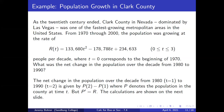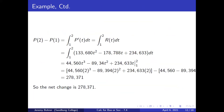As the 20th century ended, Clark County in Nevada, dominated by Las Vegas, was one of the fastest growing metropolitan areas in the United States. From 1970 through 2000, the population was growing at the rate of r(t) = 133,680t² − 178,788t + 234,633, where 0 ≤ t ≤ 3, in people per decade, and t = 0 corresponds to the beginning of 1970. What was the net change in the population over the decade from 1980 to 1990? The net change from 1980 (t = 1) to 1990 (t = 2) is P(2) − P(1), where P' = r.